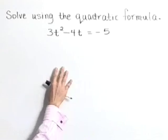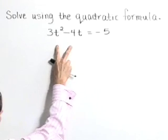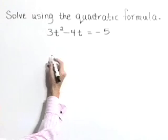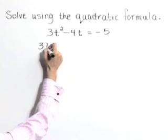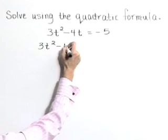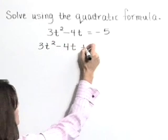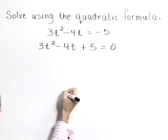In order to use the quadratic formula, we need to see this equation in standard form. So let's add 5 to both sides, writing this as 3t squared minus 4t plus 5 is equal to 0.